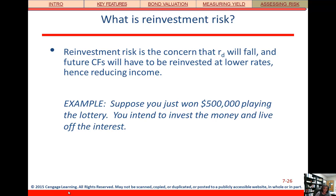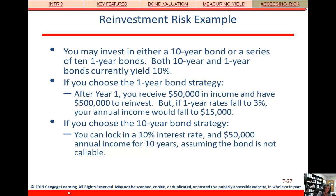Suppose you just won the lottery and want to invest that money and live off the interest. You could invest in 10-year bonds or a series of 10 one-year bonds. If you pick the one-year bond strategy, after year one you're going to get $50,000, but you have to reinvest that principal. If interest rates fall from 10% to 3%, your income is going to fall from $50,000 to $15,000. However, if you invest in long-term 10-year bonds, you're locking in that 10% interest rate over a longer period, saving yourself from reinvestment risk — assuming those bonds aren't callable.